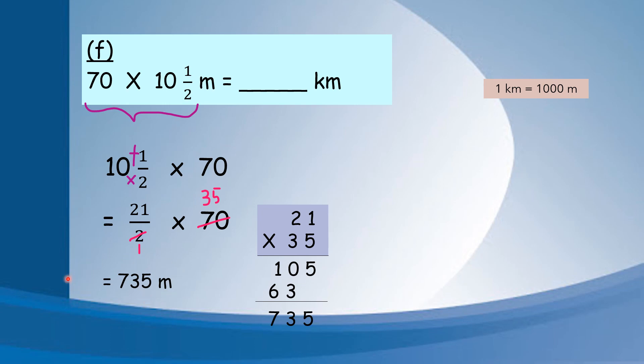Once you get this answer, then only you convert to km. Not finished yet, we need to convert to km. Take this answer: 735 m convert to km. Remember like earlier - m to km divide by 1000. I put the point at the back and move 3 steps to the left. Then I will get 0.735 km.